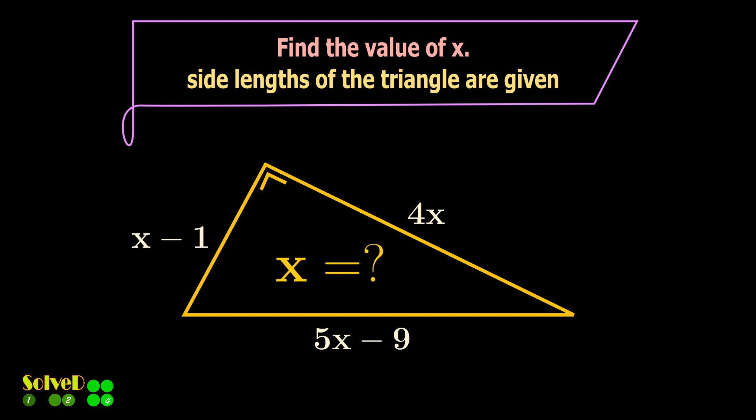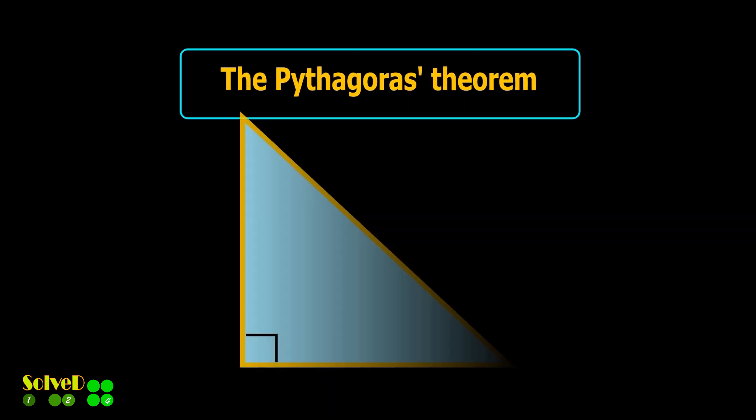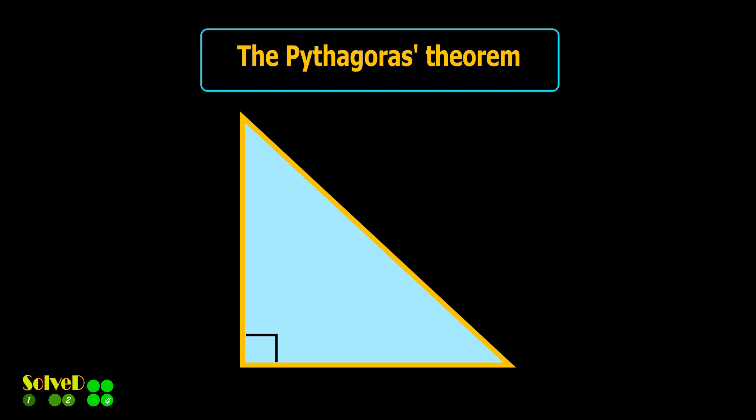The right angle is equal to 90 degrees. Using the Pythagoras theorem, for a right angled triangle with side length a, b, and c, these side lengths are related by this equation.